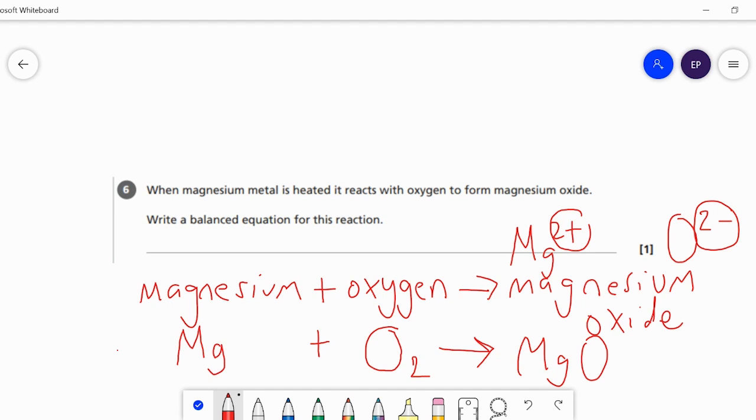Finally we need to balance our symbol equation. We can see on the left hand side we have 1 magnesium and 1 oxygen molecule so 2 oxygens on the left hand side. On the right hand side we've got 1 magnesium and 1 oxygen. Although the equation balances for the magnesiums, it doesn't balance for the oxygens - there's 2 on the left but only 1 on the right.